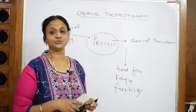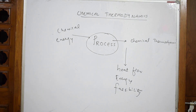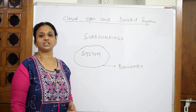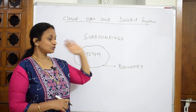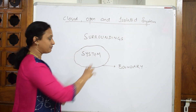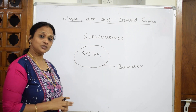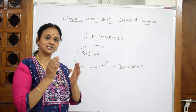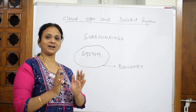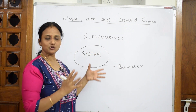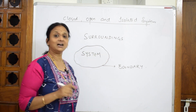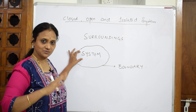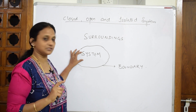Now let's look at the different terms used in chemical thermodynamics. First, I've drawn a particular area on the whiteboard with a boundary. The system is defined as a particular portion of matter under study — a space or point of matter occupying a certain amount of space. That is the system.